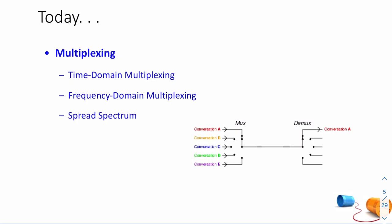For today's lecture, we're going to introduce the idea of multiplexing — multiplexing in the time domain, multiplexing in the frequency domain, and a combination of the two, which we refer to as spread spectrum. You're going to see the symbol MUX, representing a multiplexor, and DMUX, representing a demultiplexor.